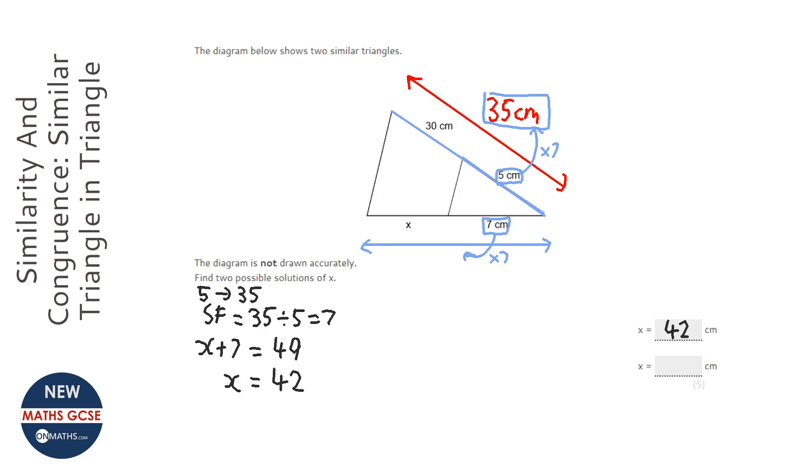However, that's an assumption that we've made because it kind of looks like it does. We're used to questions where these two here are parallel and therefore it definitely would. But there's nothing in the question that says these two are parallel, so it could be that this seven centimeters here is the one that corresponds with the 35 centimeters here. So we've got to run the figures again.